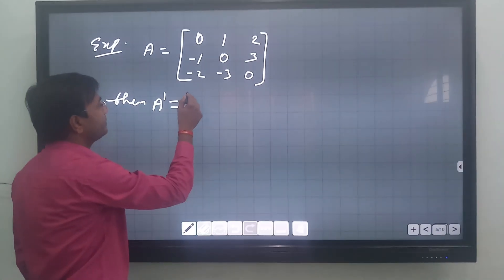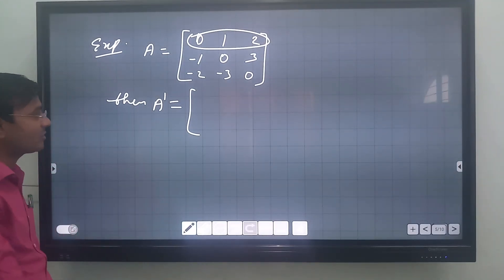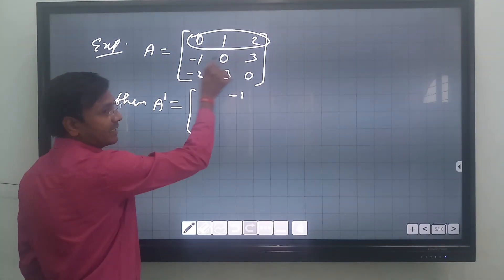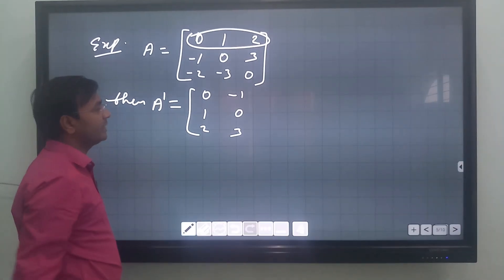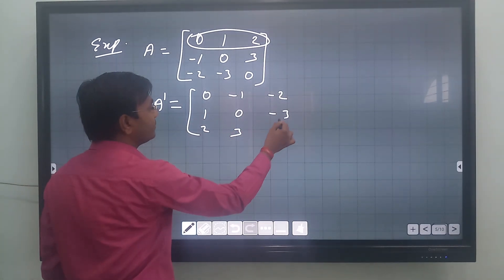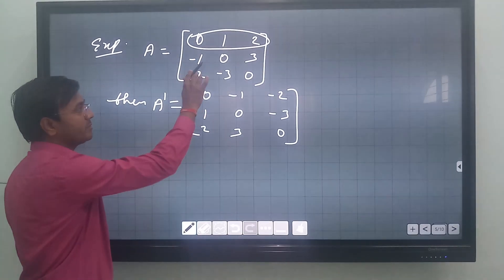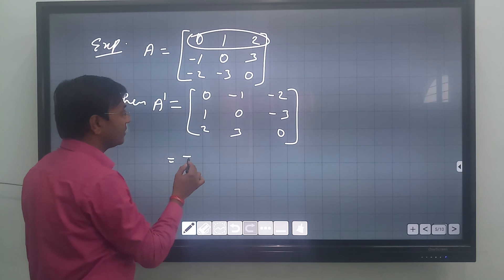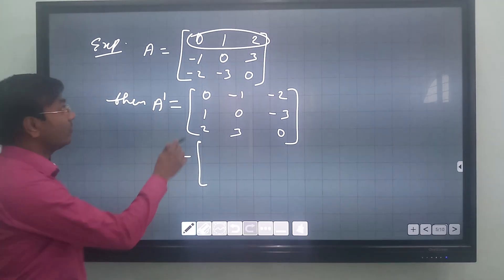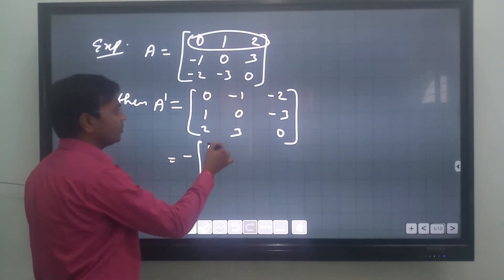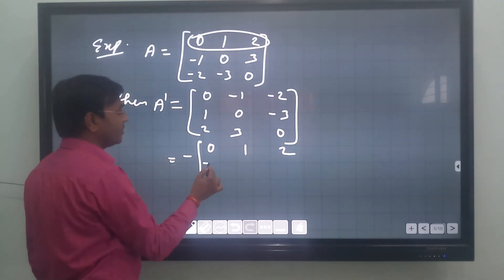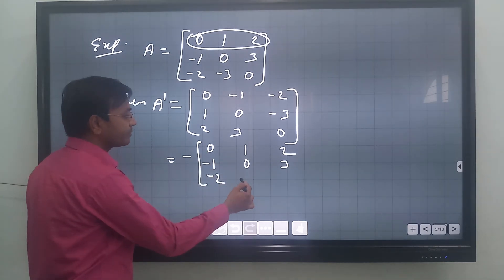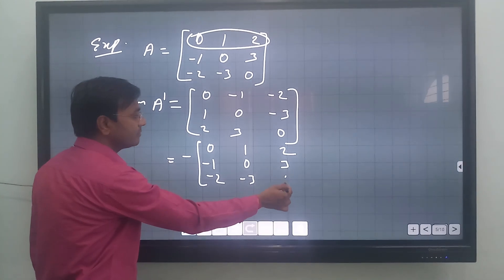Let us find A transpose. We change rows into columns: the first row 0, 1, 2 becomes the first column; the second row -1, 0, 3 becomes the second column; and the third row -2, -3, 0 becomes the third column. Now, taking minus common from A^T gives: minus of [[0, -1, -2], [1, 0, -3], [2, 3, 0]].